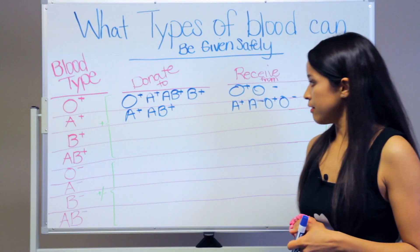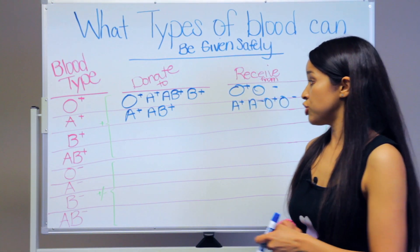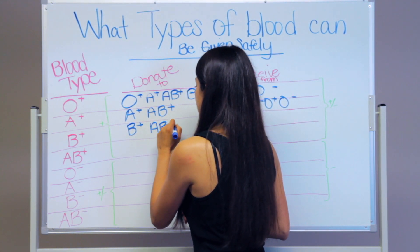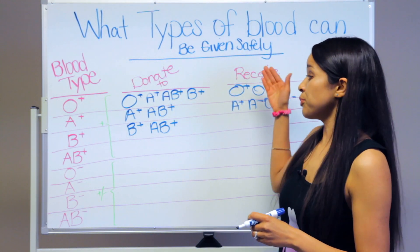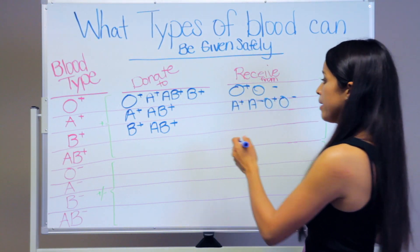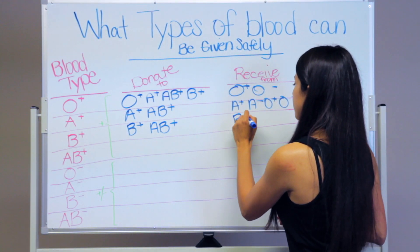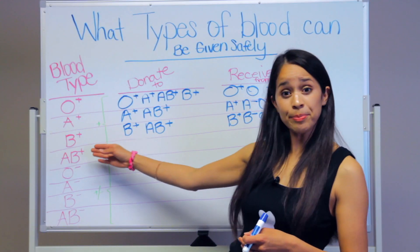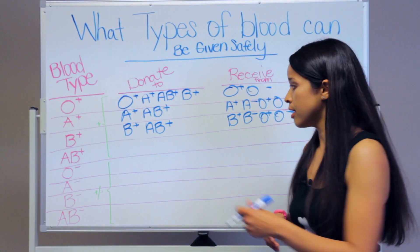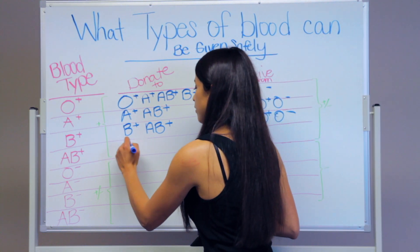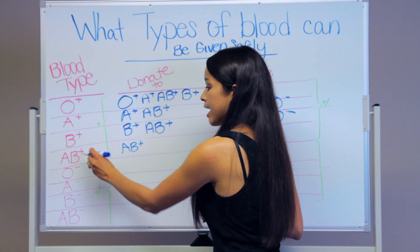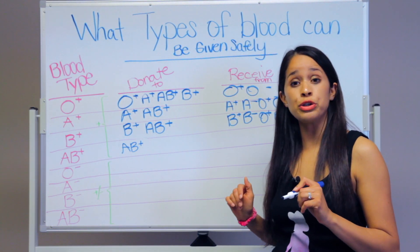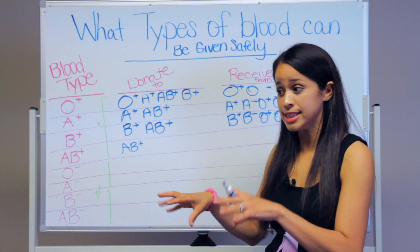For the B positive patient, they can donate blood to B positive and AB positive. They can receive blood from B positive, B negative, O positive, and O negative. AB positive can donate to AB positive only, but AB positive can receive blood from everyone because they are the universal recipient.